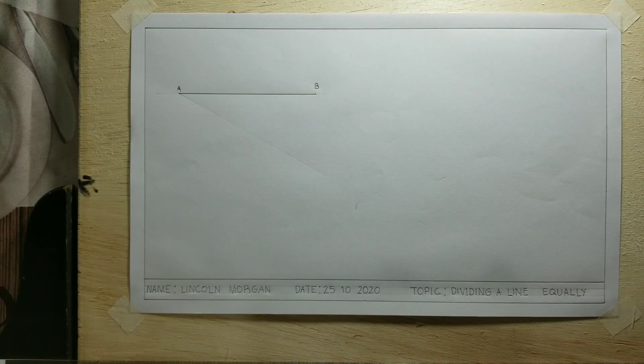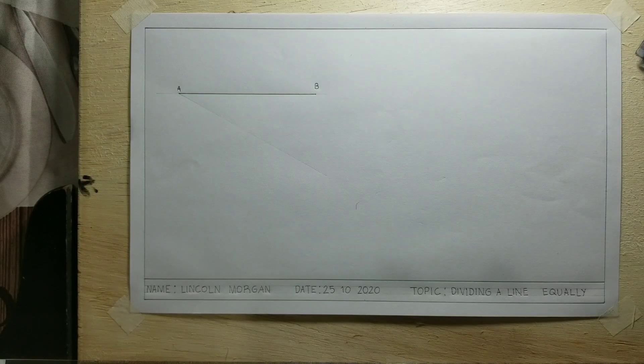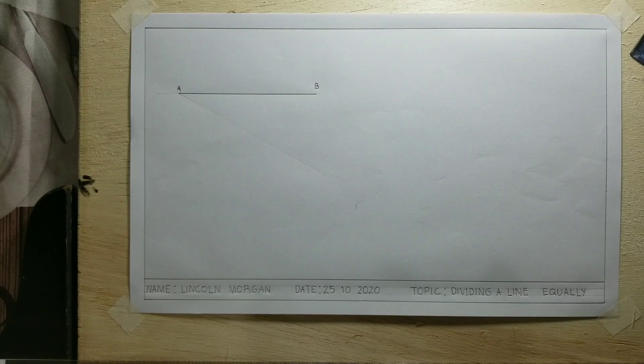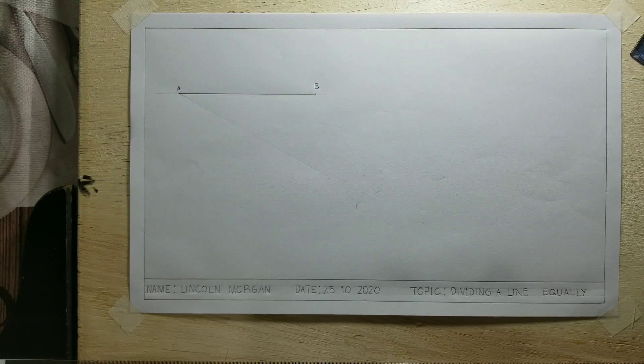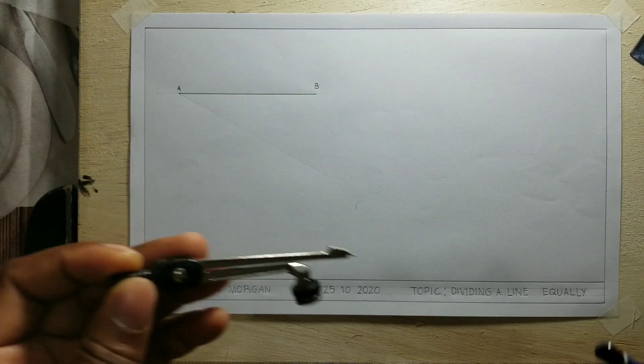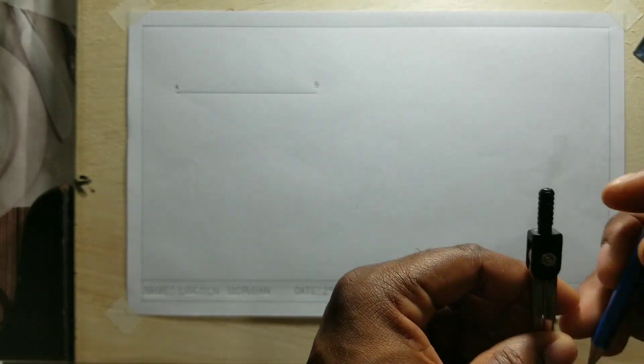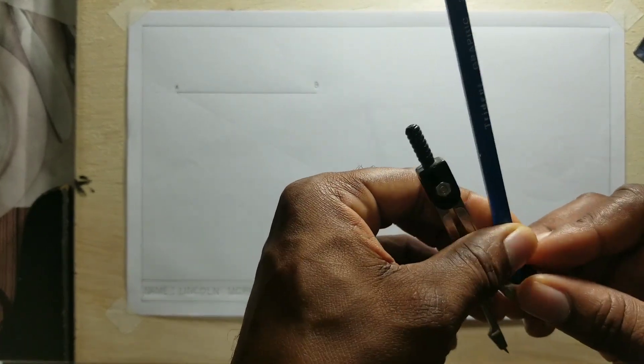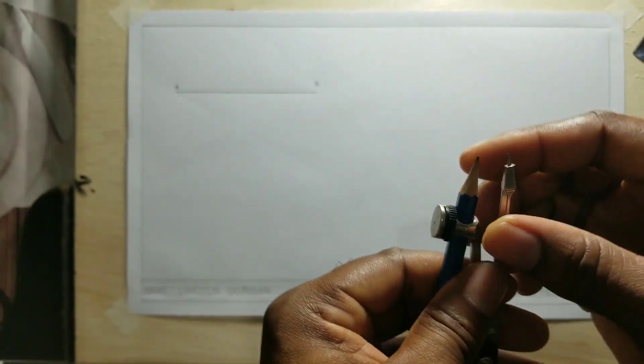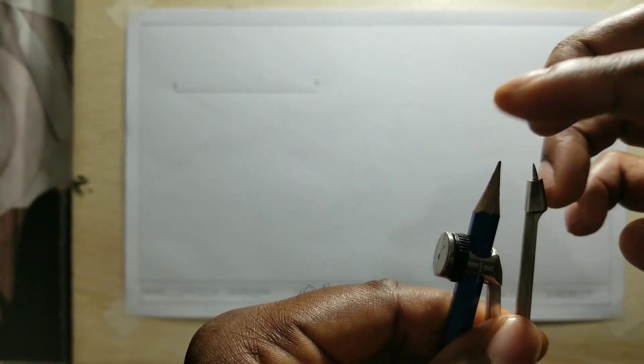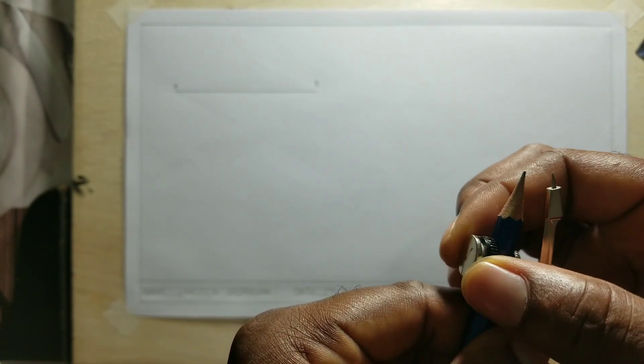Now I am going to divide this line into 10 equal parts. So what I'm going to do is I'll be installing my pencil into my compass, and we want to ensure that the pencil and the tip of our compass is balanced.